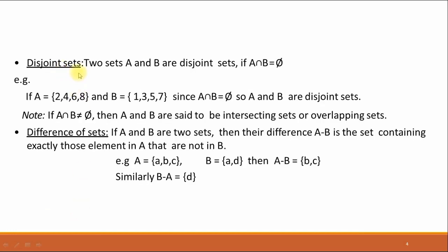Now, what are disjoint sets? Two sets A and B are said to be disjoint if they have no common element. That is, A intersection B is equal to the empty set. For example, set A contains the elements 2, 4, 6, and 8, and B contains the elements 1, 3, 5, and 7. Since there is no common element between A and B, the intersection of these two sets will be empty. So sets A and B are called disjoint sets. If A and B are not disjoint and have some common elements, then A and B are said to be intersecting sets or overlapping sets.